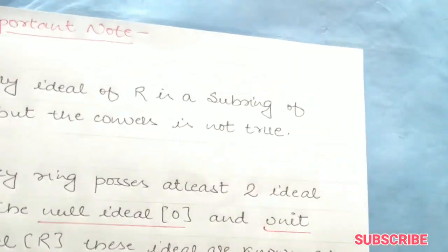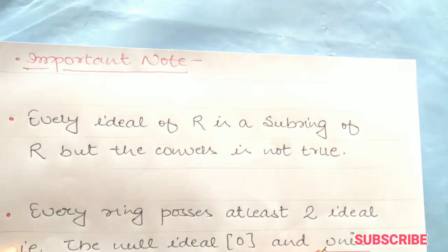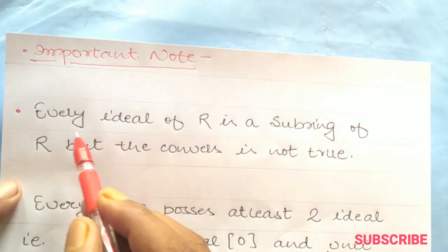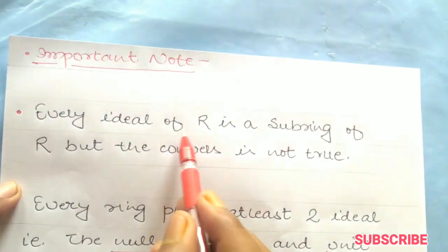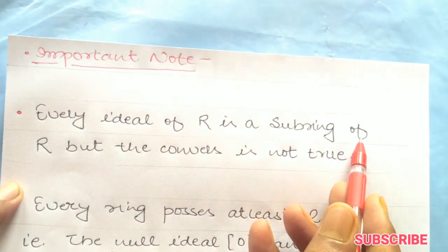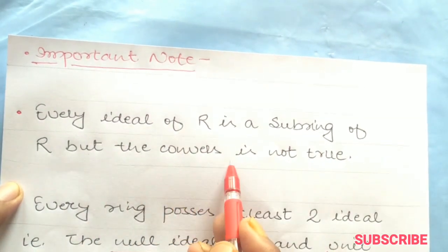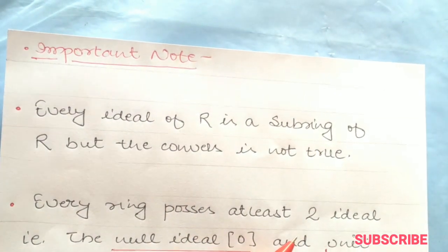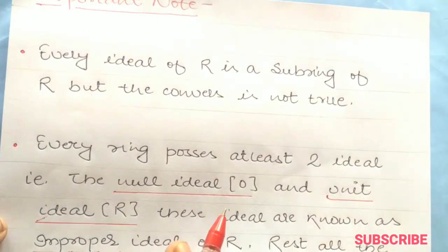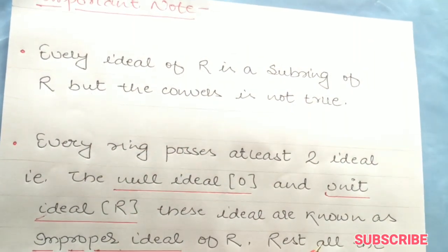Now let's see an important note which is very useful. What is the first note? Every ideal of R is a subring of R, but the converse is not true. This is the first important note.